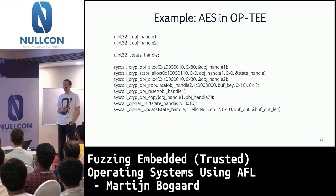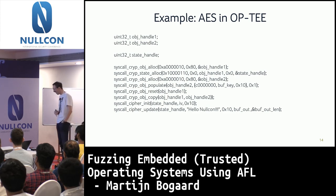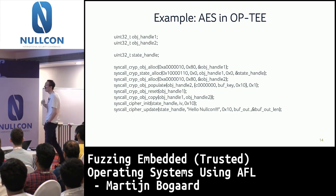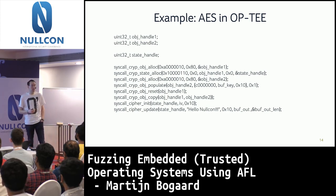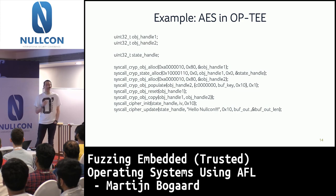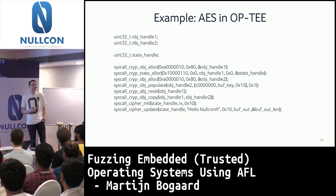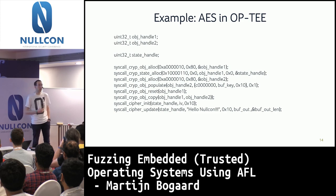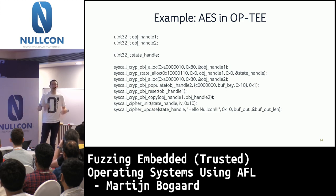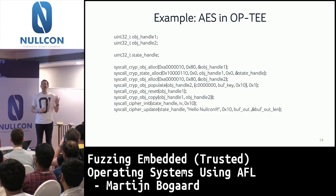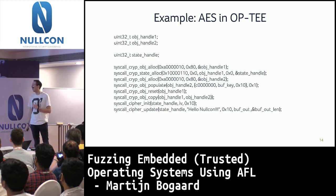This is only the surface layer. Most of those APIs are actually services provided by the trusted operating system. The API calls we've seen are turned into system calls: allocate this crypto object, populate this crypto object with a key, reset the state of the crypto subsystem, copy over some data, initialize, etc. This is actually the layer we are interested in, because vulnerabilities in this layer would allow a malicious or compromised trusted application to attack other parts of the trusted execution environment.